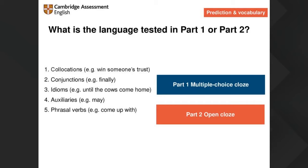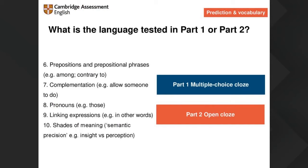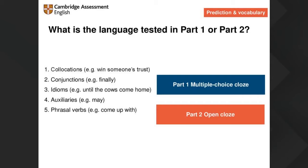Parts one and two in Reading and Use of English are both clozes. Part one is a multiple choice cloze with four options. Part two is an open cloze — students need to come up with a word not provided. Part one has a more lexical focus, whereas part two has more emphasis on grammar. Language tested includes collocations, conjunctions, idioms, auxiliaries, phrasal verbs, and more. Knowing which to expect in which part is important.